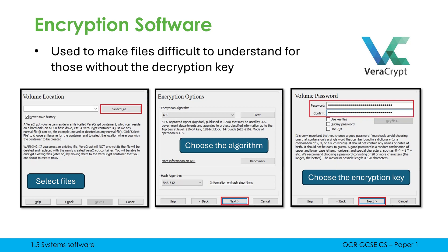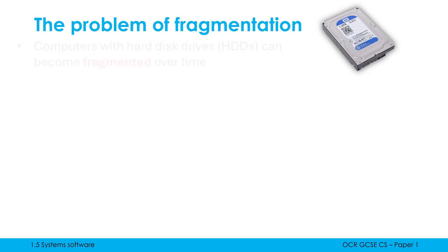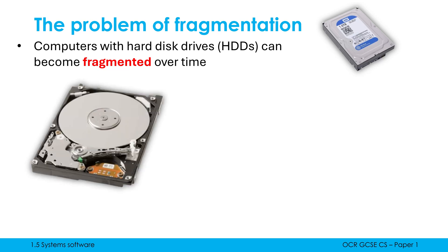Those first two are hopefully straightforward if you've covered those concepts already, but defragmentation software takes a bit more explanation. Before we get on to what defragmentation software is, we need to talk about what fragmentation is. Fragmentation relates to magnetic hard drives — computers which have hard drives can become fragmented over time, especially as they fill up and near full capacity. Inside a hard drive is a disk that spins very fast, and data is distributed on the disk surface, stored using different magnetisms.